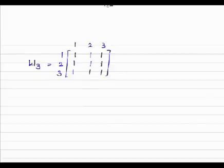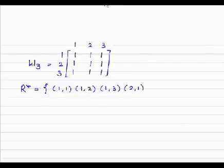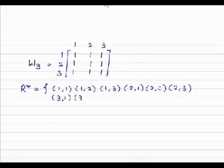W3 equals 1, 2, 3 by 1, 2, 3. All the entries are (1,1), (1,2), (1,3), (2,1), (2,2), (2,3), (3,1), (3,2), (3,3). Therefore, the transitive closure equals (1,1), (1,2), (1,3), (2,1), (2,2), (2,3), (3,1), (3,2), (3,3). This is the transitive closure. This is the way we are finding the transitive closure of any relation.